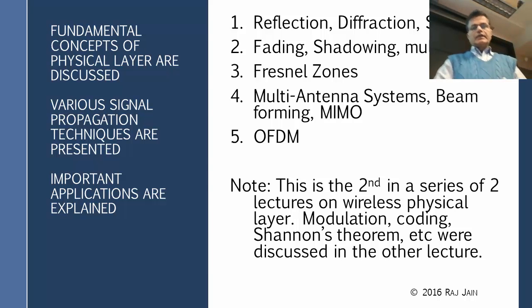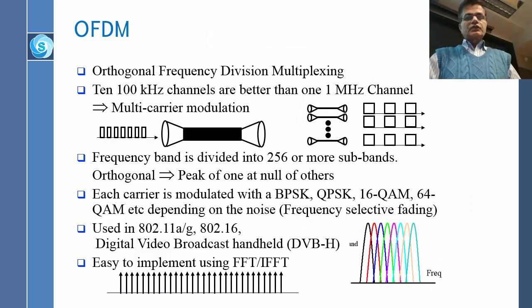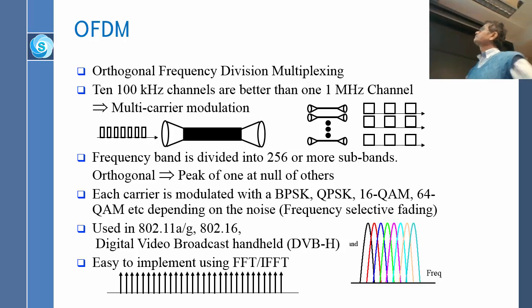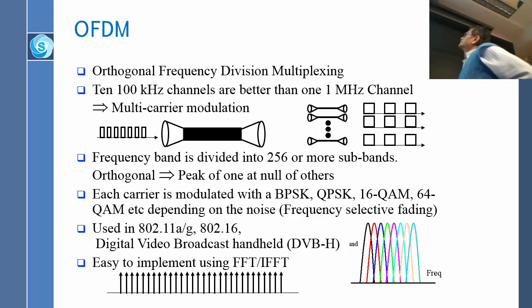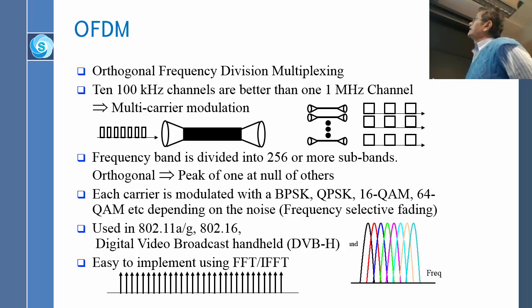OFDM stands for Orthogonal Frequency Division Multiplexing. The basic idea is that instead of using a big frequency band, you divide it into tiny bands. Instead of using a thick wire, you use many little tiny wires. So if you are given a 1 megahertz channel, instead you use 100 kilohertz channels, and things will be much better using 10 channels than using one channel as it is.